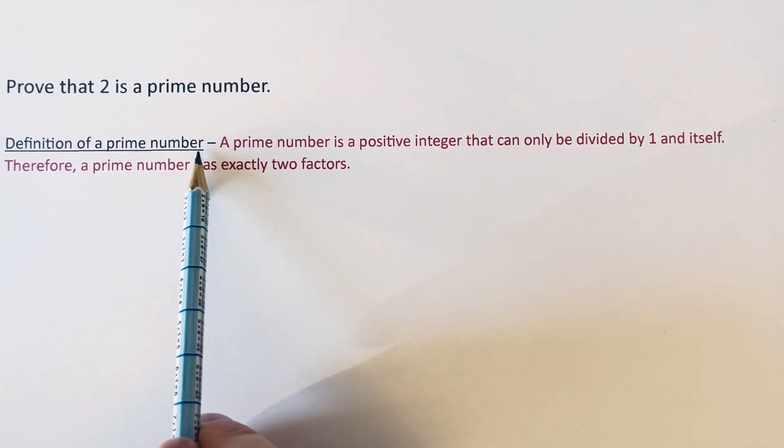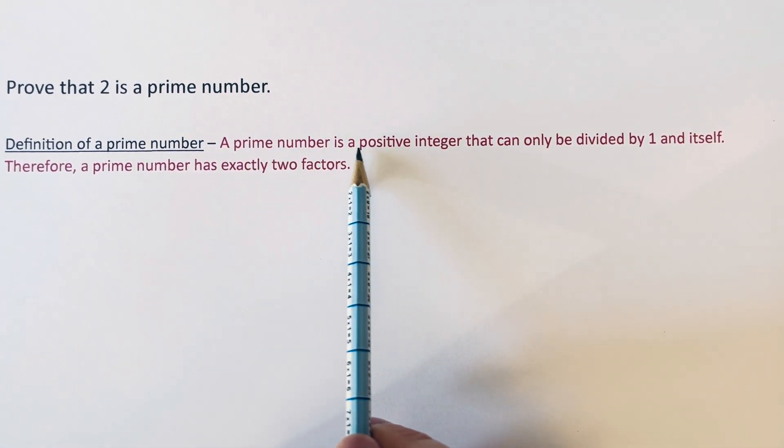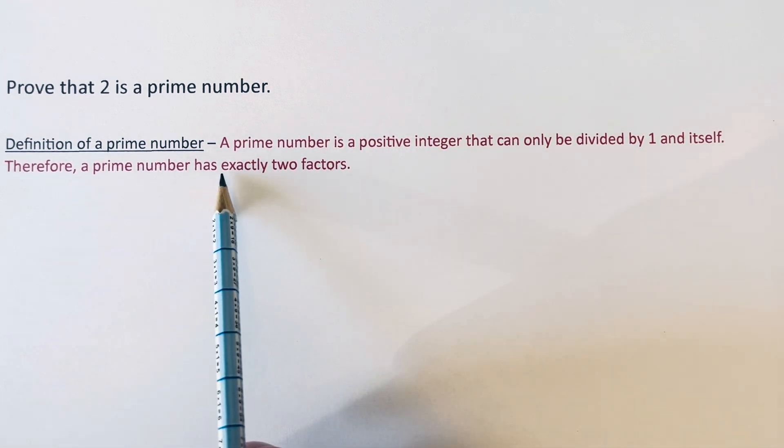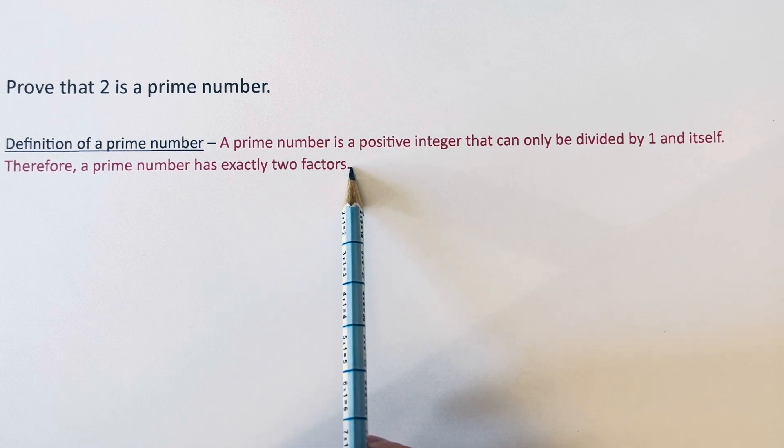To do this, we need to know the definition of a prime number. A prime number is a positive integer that can only be divided by 1 and itself. Therefore, a prime number has exactly two factors.